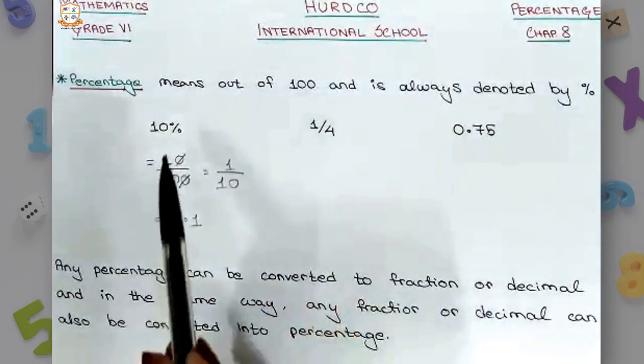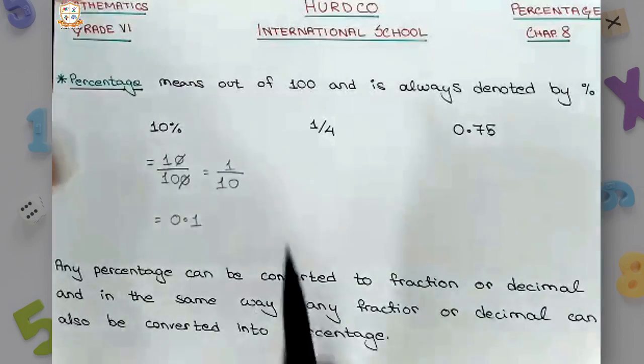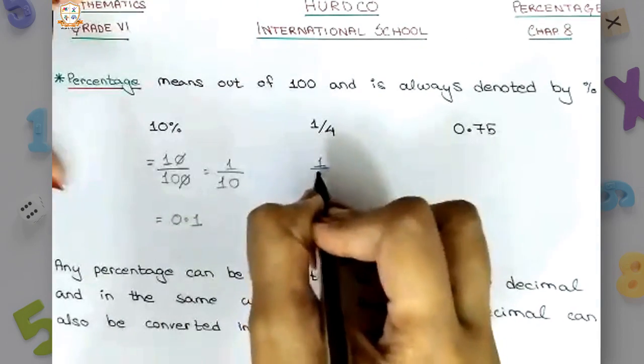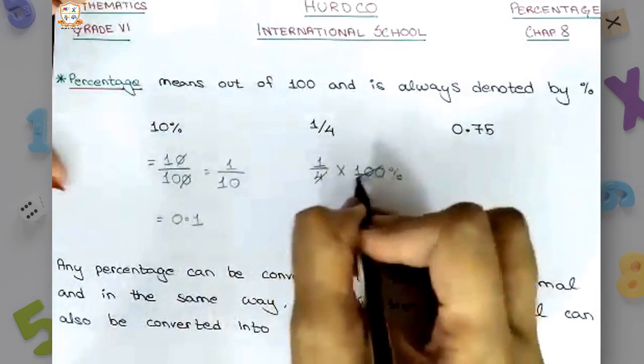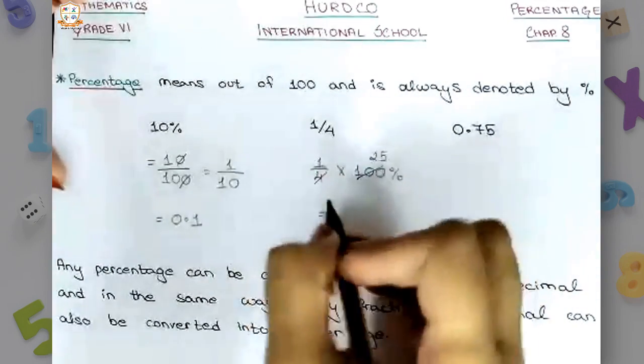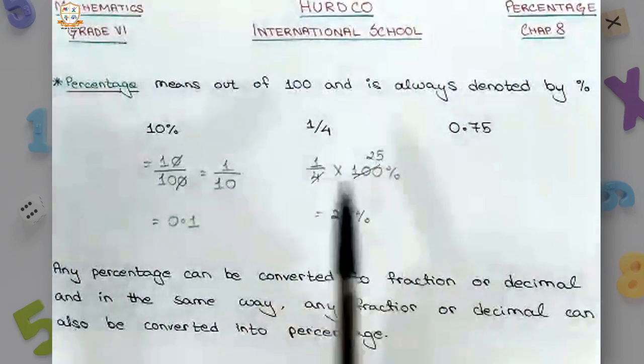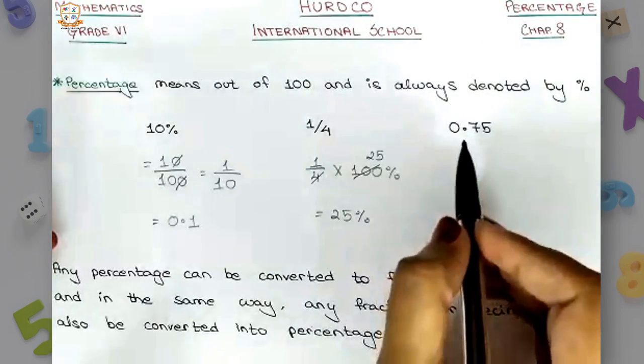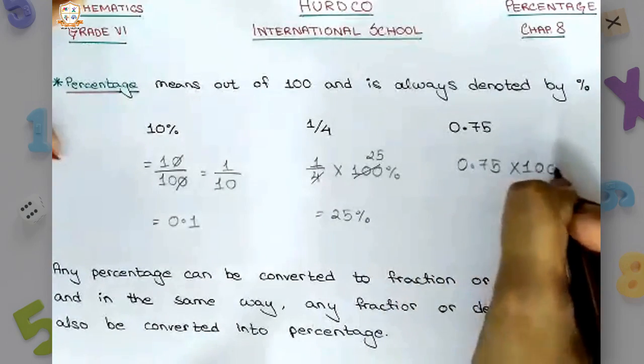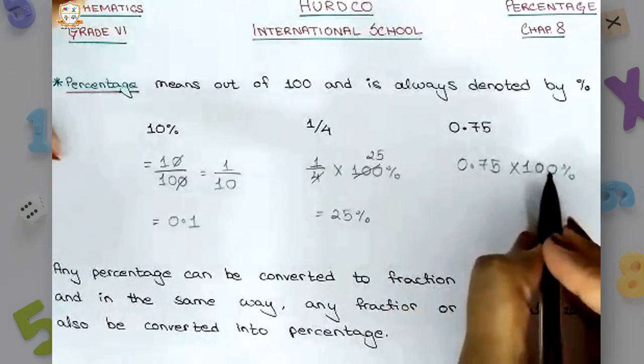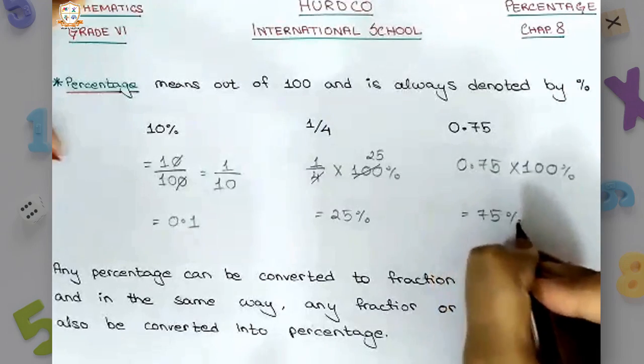Now since we have converted the percentage into fraction and decimal, we can also go the other way around. For example, if you're provided with a fraction 1 by 4, we can multiply this with 100 percent. If we multiply with 100 percent then we end up getting 25 percent. In the same way, 0.75 multiplied with 100 percent will shift the decimal places two digits to the right, so it will become 75 percent.